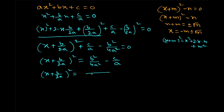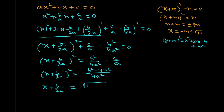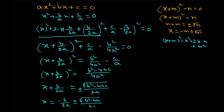The LCM of the right side is 4a squared, so it becomes b squared minus 4ac all over 4a squared. Now taking the square root of both sides, x plus b divided by 2a equals plus or minus root of b squared minus 4ac, divided by 2a. Transposing b by 2a to the right gives x equals minus b by 2a plus or minus root over b squared minus 4ac divided by 2a.